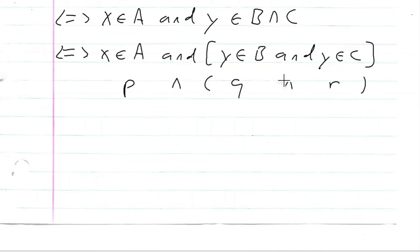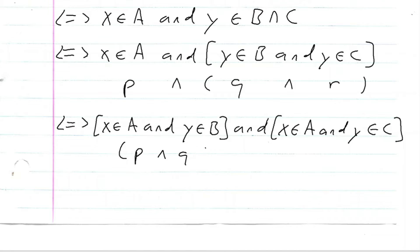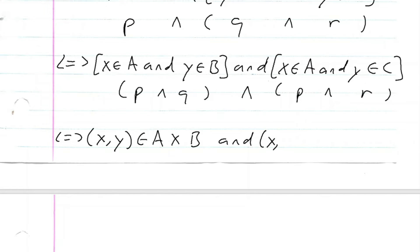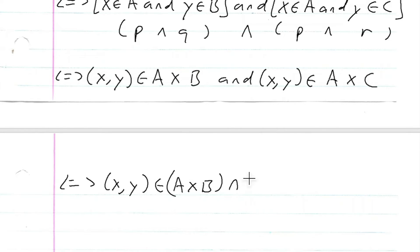Now logically, we can see this is of the form P and Q and R. This statement is logically equivalent to: x is an element of A and y is an element of B, and x is an element of A and y is an element of C — because P∧Q∧R is logically equivalent to (P∧Q)∧(P∧R). Using the definition of cross product, this means (x,y) is an element of A cross B and (x,y) is an element of A cross C.